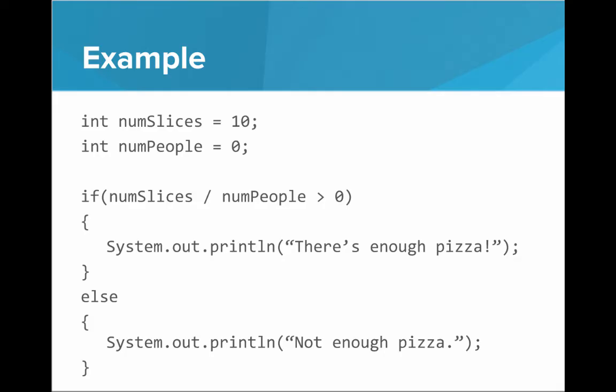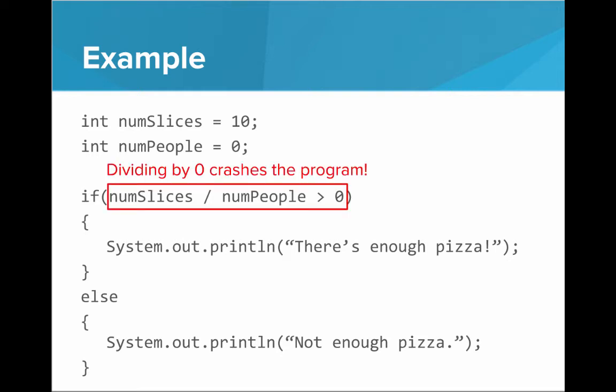Let's look at an example of how we can use this. Here we have a program that determines if there's enough pizza for everyone. We divide the number of slices by the number of people, and if that value is greater than zero, then there must be enough pizza for everyone. But there's a problem: if numPeople is equal to zero and we divide by zero, this crashes the program. We can't divide something into zero parts — Java will crash if you try to divide by zero.